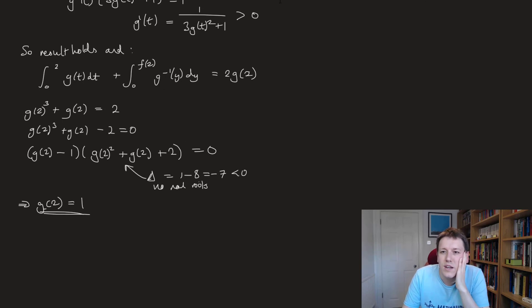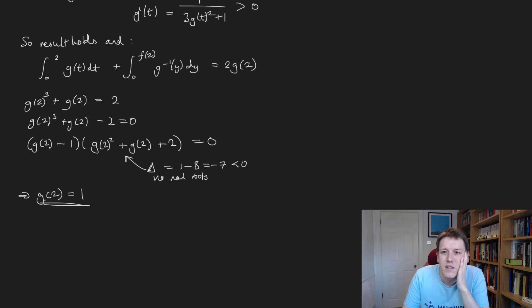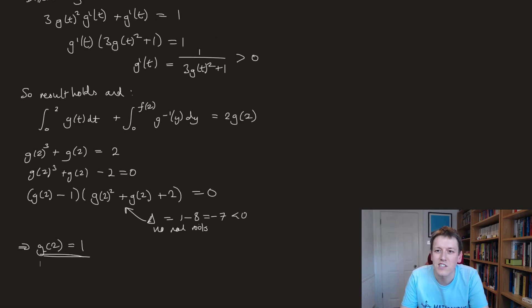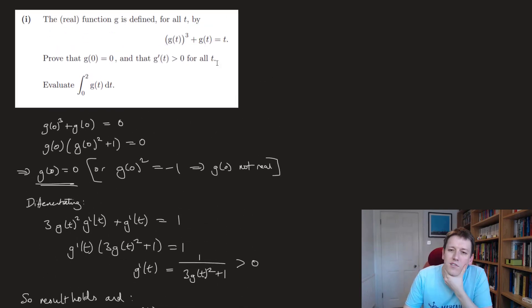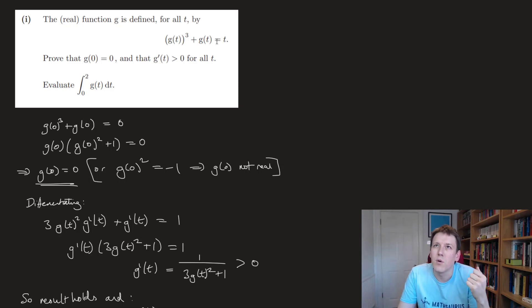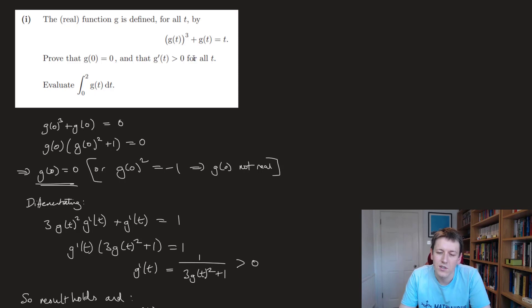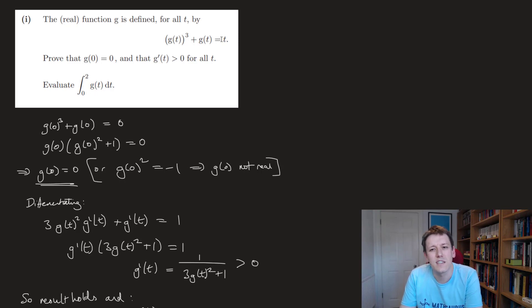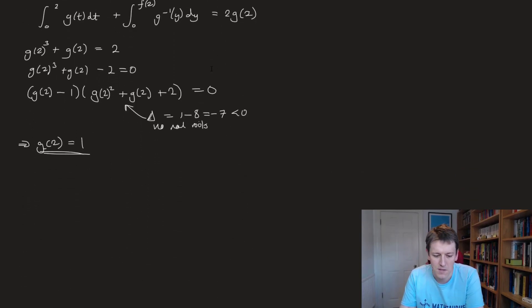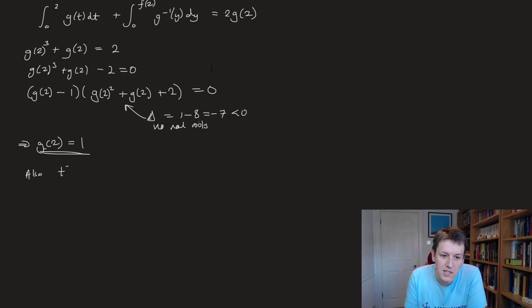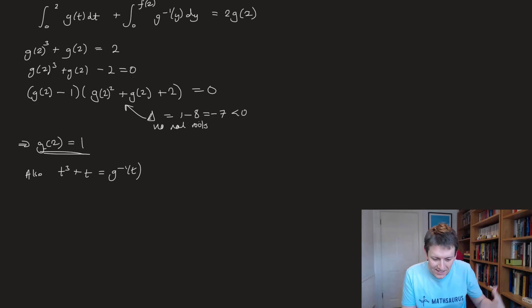Now I need to work out g⁻¹. When we find inverse functions, we swap the roles of input and output. So I'll make all the g(t)'s into t's, and all the t's into g⁻¹(t). From g(t)³ + g(t) = t, swapping gives t³ + t = g⁻¹(t). That gives us the inverse function.